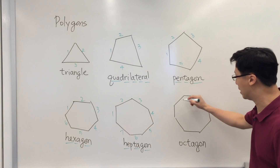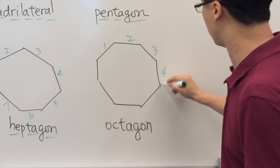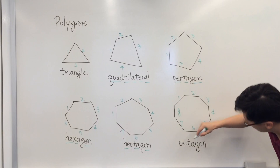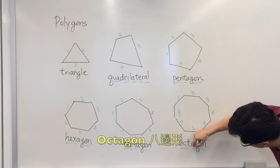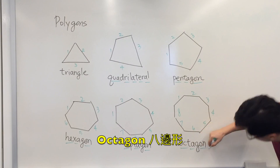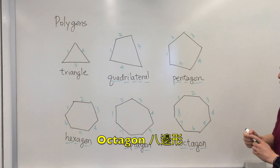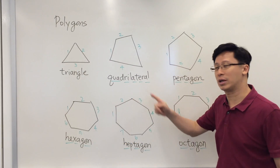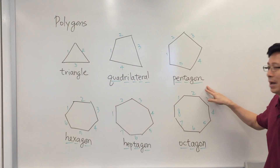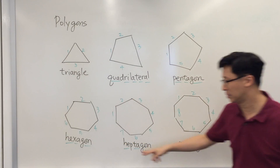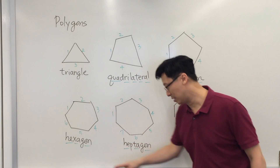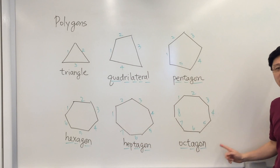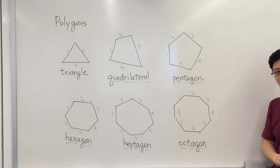Finally, this one is a plane figure with eight sides and we call this an octagon. Now let's do a review: triangle, quadrilateral, pentagon, hexagon, heptagon, and octagon.